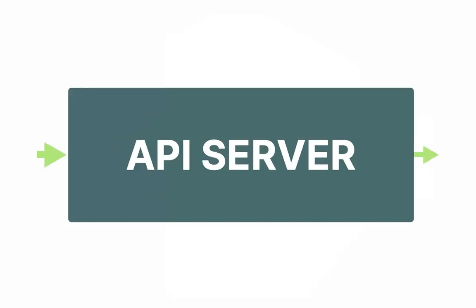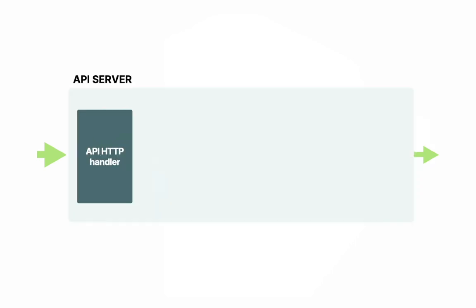So far, I've shown you the API server as a single block in the diagram. However, in reality there are several components involved in processing the request. The first component in the API server is the HTTP handler. We can think of the HTTP handler as a web server ready to receive HTTP requests that we or other systems send to it.